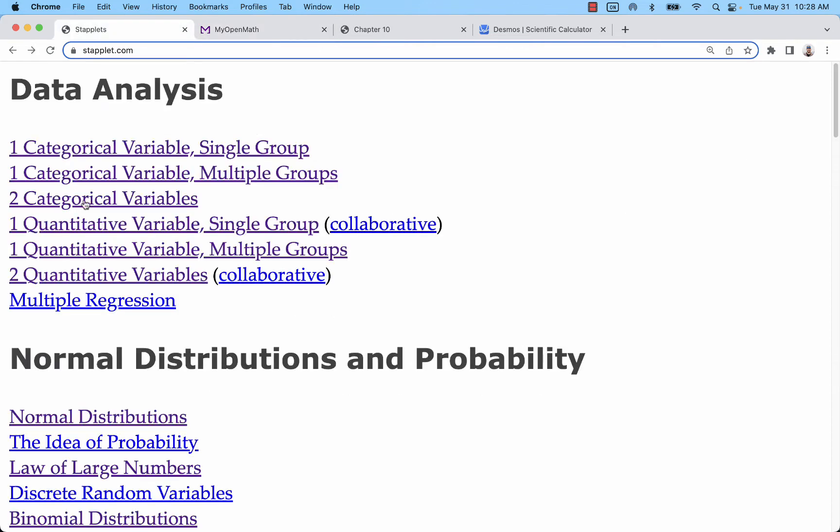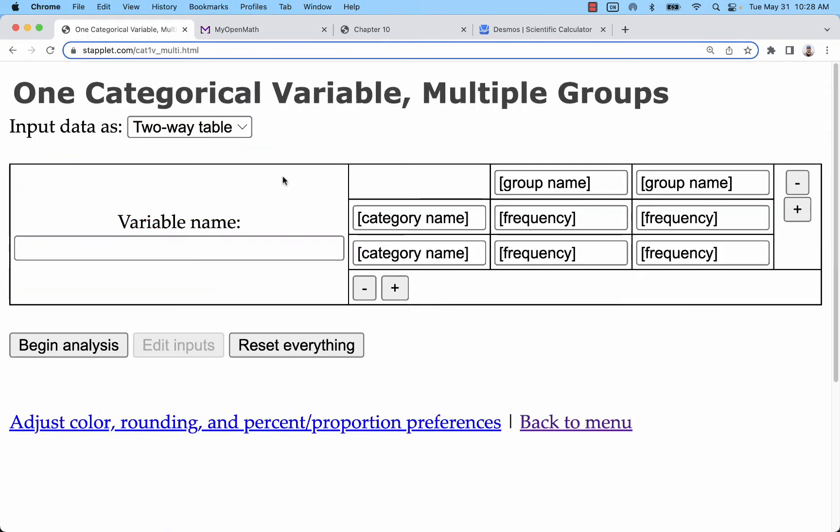When we go to Staplet, we're going to go to one categorical variable, multiple groups here. We have our groups 1 and 2. So in this situation, it's 2010 and 2011.